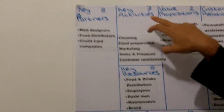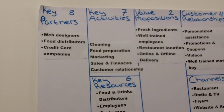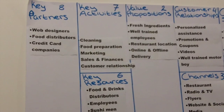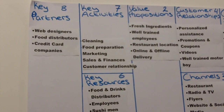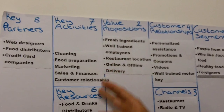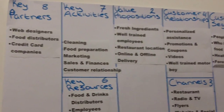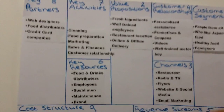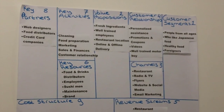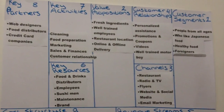The seventh building block is key activities, which comes down to what you do on a daily basis in order to be successful. For our restaurant, that includes cleaning, food preparation, marketing, sales, finance, and customer relationship management. This looks very simple, but once you get to work more things will come up. That's why I leave some space between blocks — this is a constant work in progress. Your business will never be one hundred percent perfect because the market changes and the needs of people change.